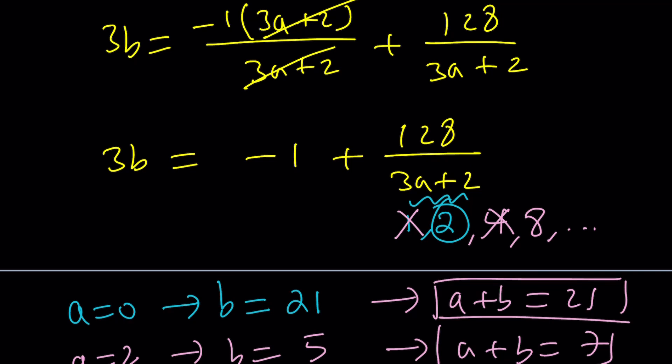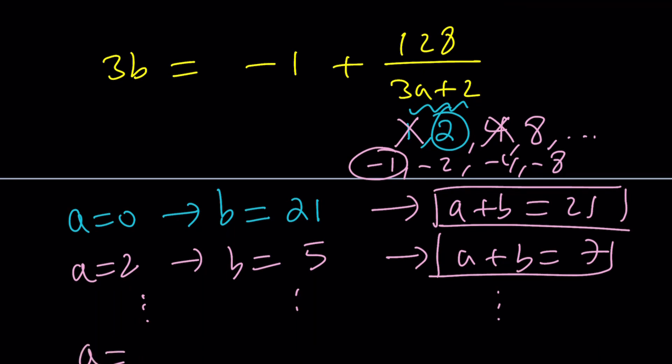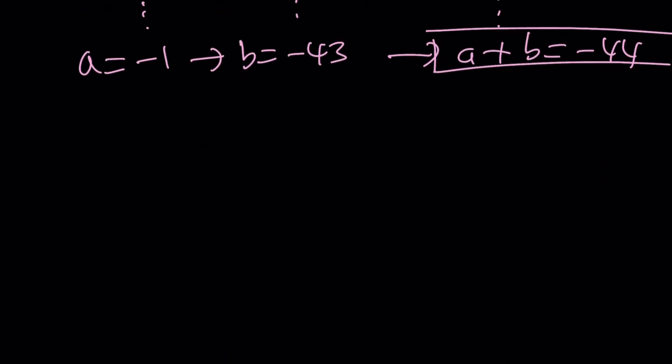But of course, you also have to consider the negatives. Don't forget, negative 1, negative 2, negative 4, negative 8. Notice that not all of these are going to give you good integer values. For example, negative 1 is going to work because that means A is negative 1. But if you divide 128 by negative 1, you're going to get negative 128, negative 129. Guess what? That's divisible. Cool. That's just another value that works. But if A equals negative 1, then B is going to be negative 43. Negative 129 divided by 3. So that's just another value, and A plus B from here is going to be negative 44. That gives us a negative value, but don't worry. It just said A and B are integers.